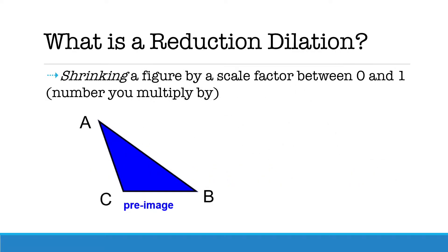Today we're going to be talking about a few types of dilations, the first one being a reduction. A reduction is when you shrink a figure by a scale factor between 0 and 1. A scale factor is the number in which you multiply your image by. So for a reduction it will get smaller.